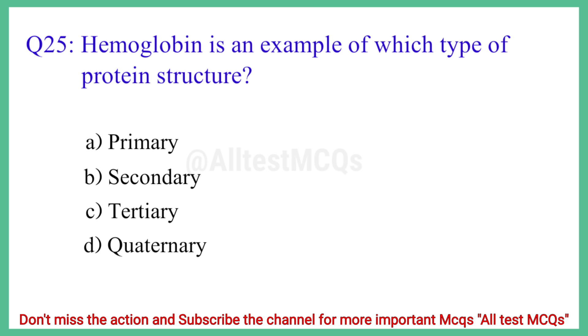Question No. 25: Hemoglobin is an example of which type of protein structure? The correct answer is option D: Quaternary.